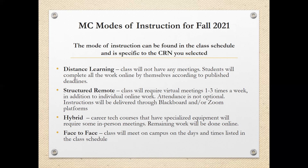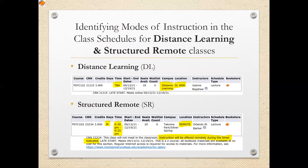Instructions will be delivered through Blackboard and/or Zoom platforms. Hybrid: career tech courses that have specialized equipment will require some in-person meetings. Remaining work will be done online and face to face. Class will meet on campus on the days and times listed in the class schedule. Students should read all notes attached to the course schedule for important information, and check their schedule to make sure their college schedule does not overlap with their high school schedule. Contact the dual enrollment office as soon as possible if there are any scheduling conflicts.